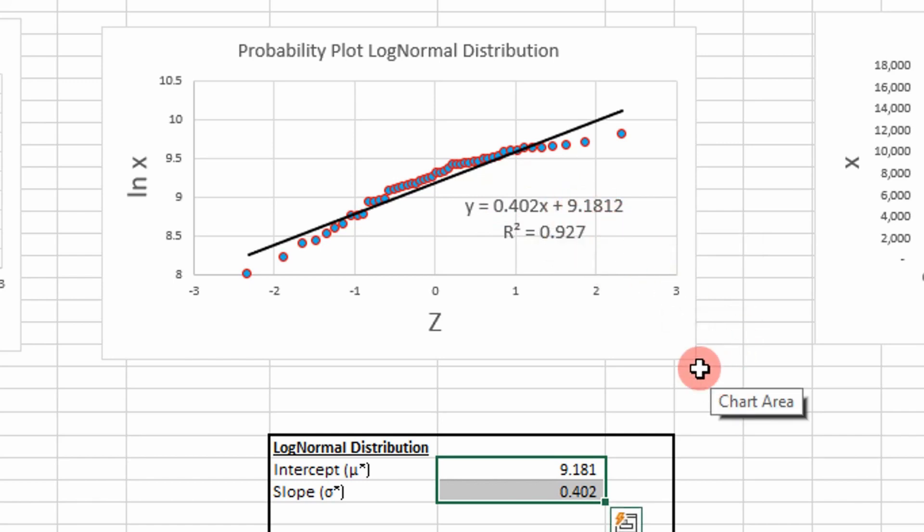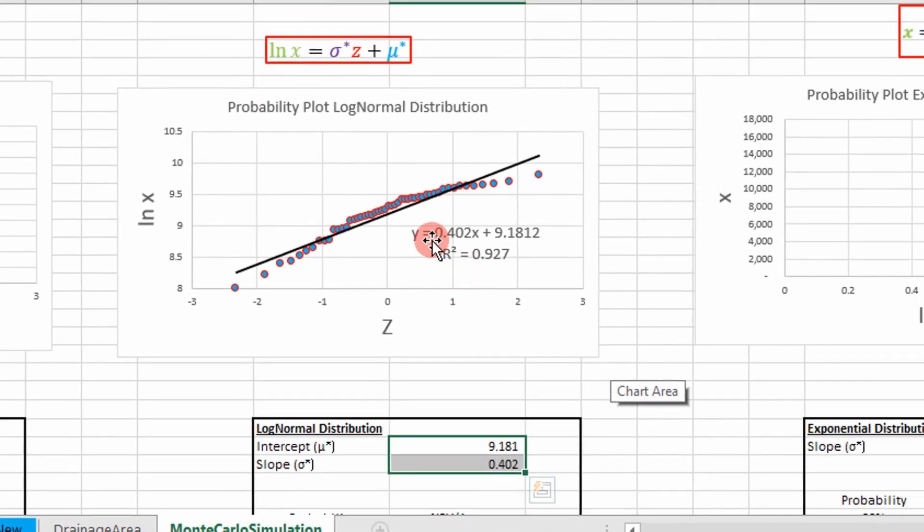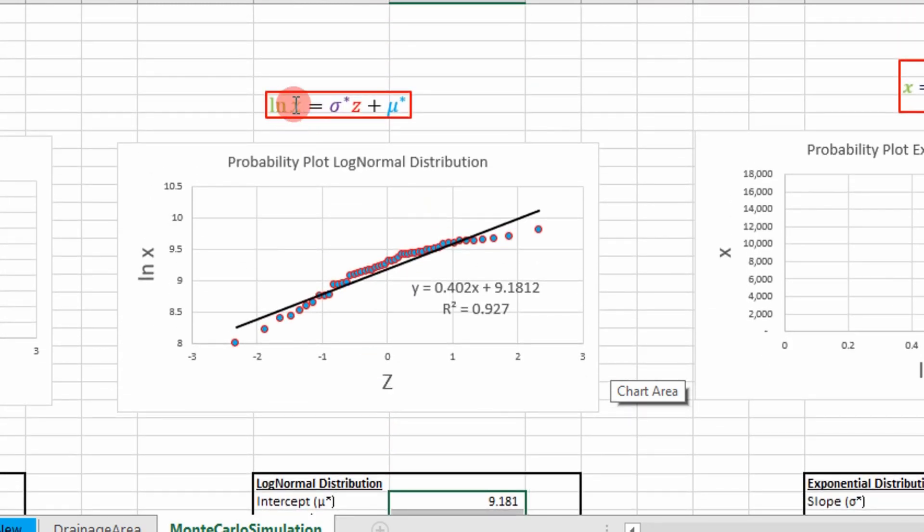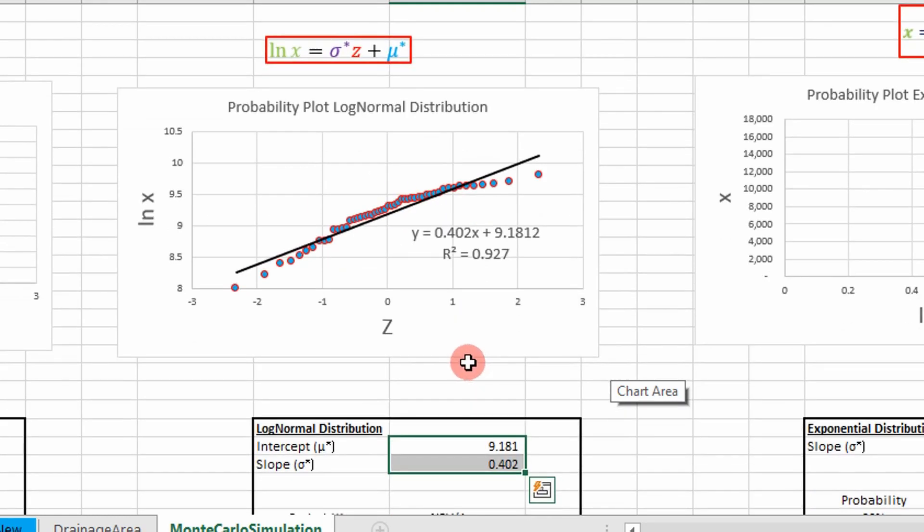So we're good to go. Now we want to determine some values at probabilities: 90% cumulative probability, 50% cumulative probability, and 10%. Basically what I'm doing is I'm solving for x in this equation. I wrote a VBA function for that.